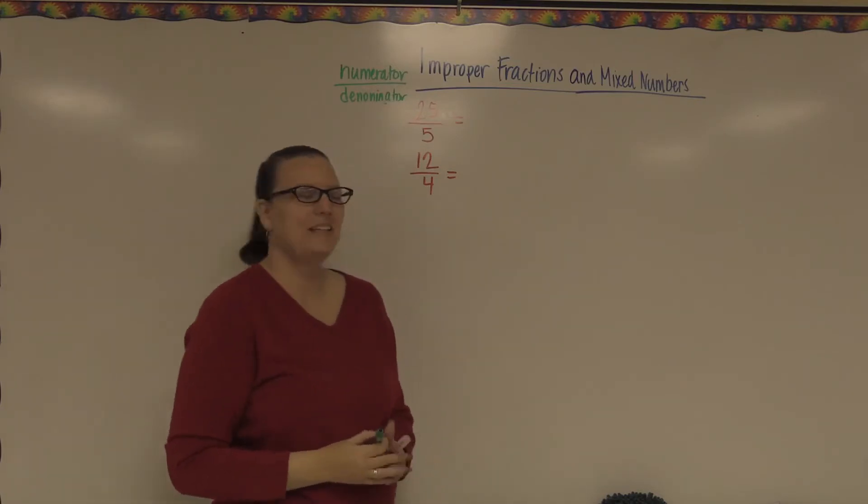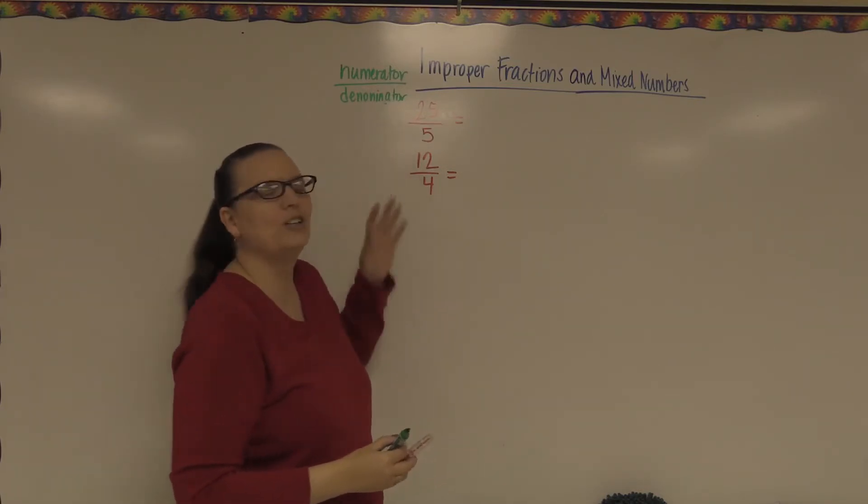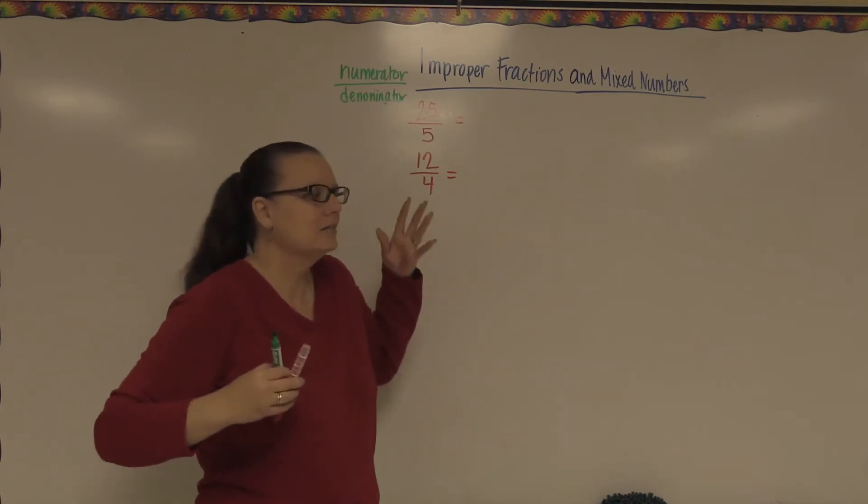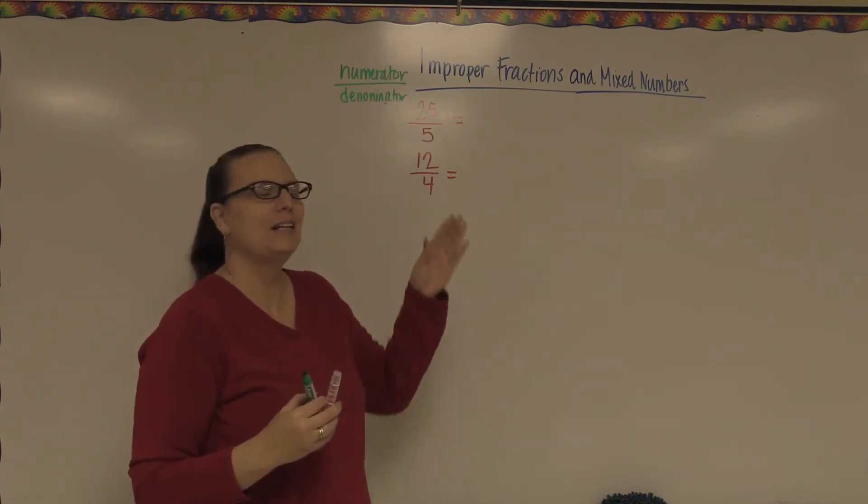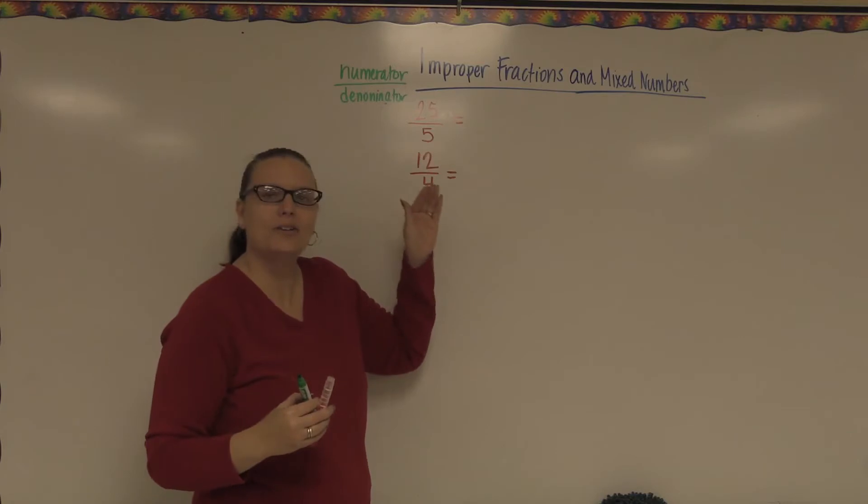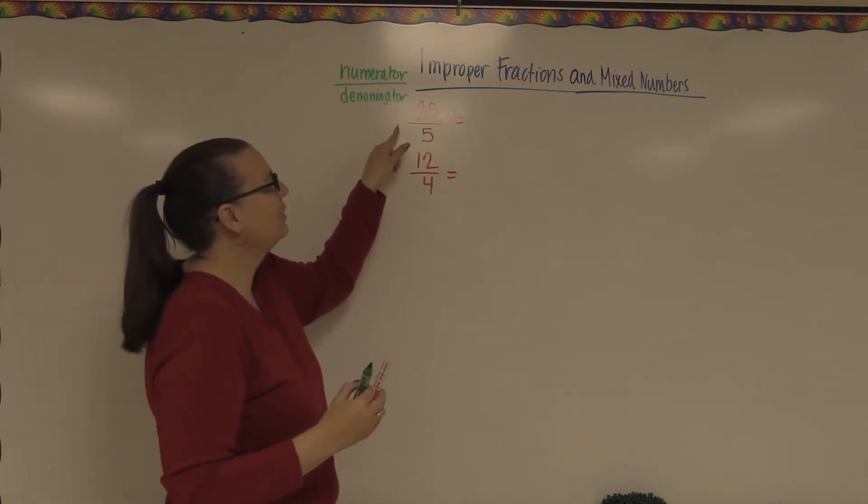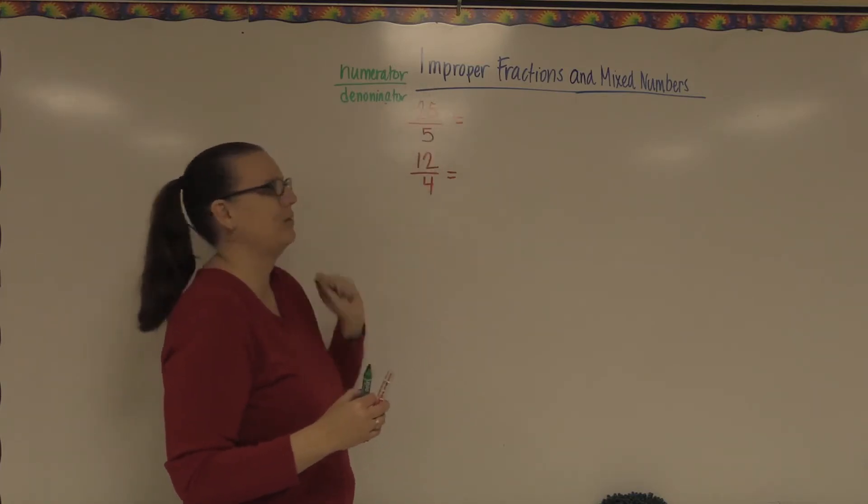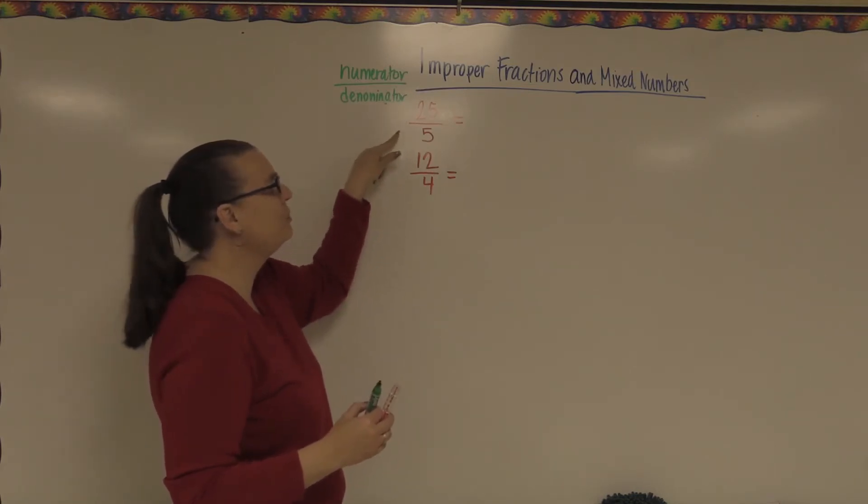When you see something like this, these are called improper fractions. In a regular, perfect fraction, the numerator should always be smaller than the denominator. These are called improper fractions because they're not set up that way. Their numerators are too big.